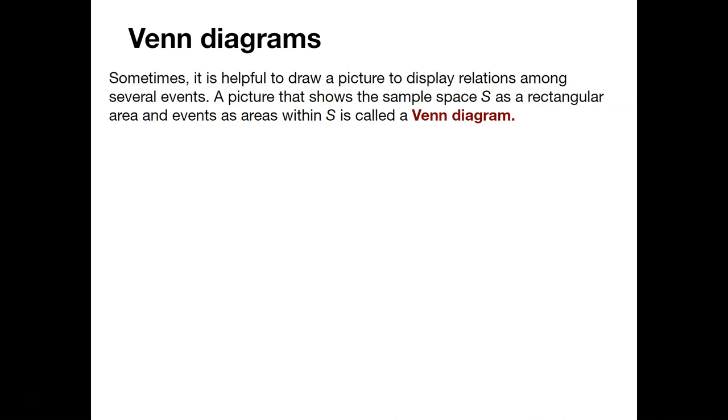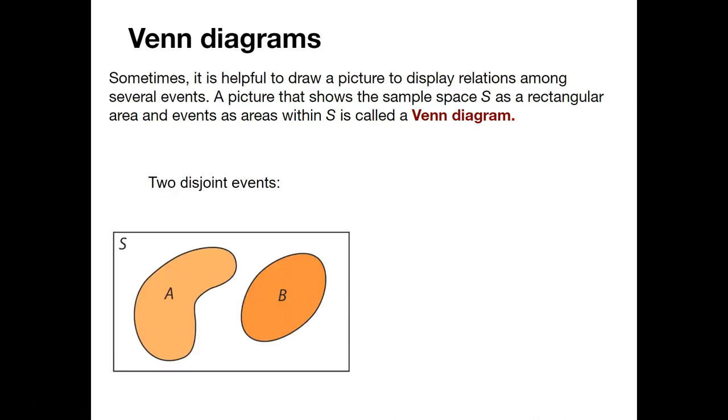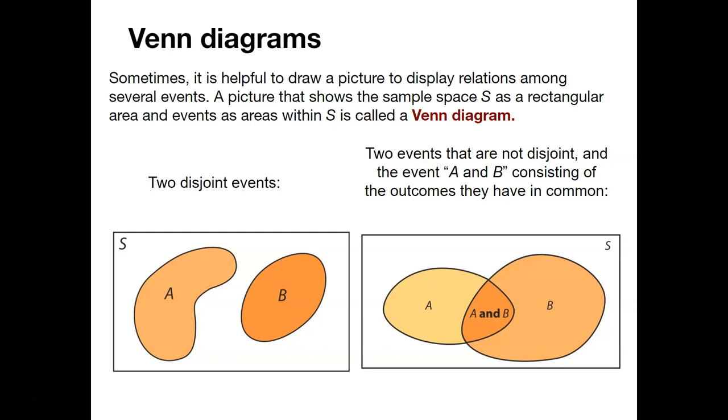Sometimes it's really helpful to look at pictures of what probabilities might look like. Here's where we'll use Venn diagrams. Here's an example where we have two disjoint events. So A is an event, and B is an event, all within our sample space. On the contrary, two events that are not disjoint, and the event of A and B consists of some overlapping between them. Here we have, A could certainly happen, B could certainly happen, but also A and B can happen. An example might be, the probability that it rains today is 50%. The probability that a baseball team wins a game today is 40%. What's the probability of both of those occurring? We would say these two probabilities are not disjoint.